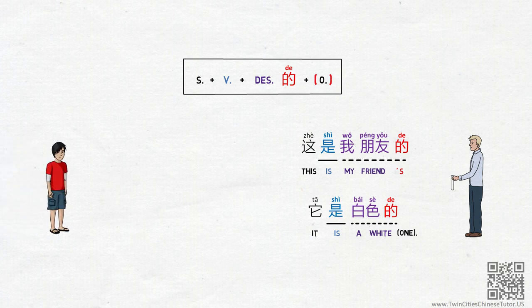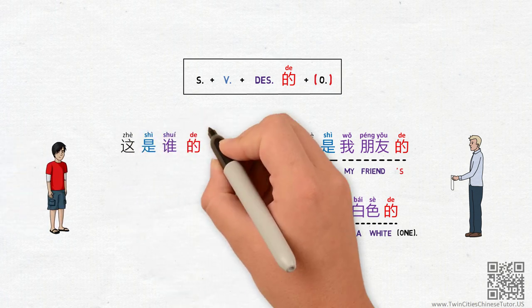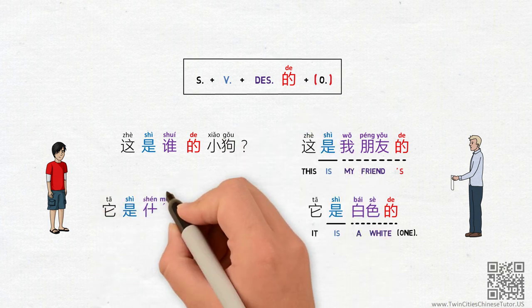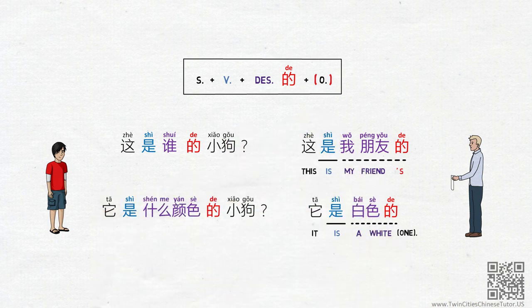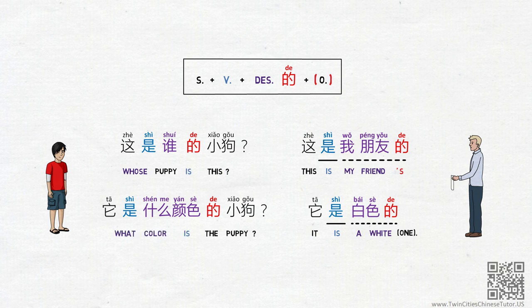For example, if someone asks 这是谁的小狗? and 它是什么颜色的小狗?, Loic can just answer 这是我朋友的 and 它是白色的. As you can see, Loic omitted the object 小狗, the puppy, but we can still understand that he is saying the same thing as in our very first examples.